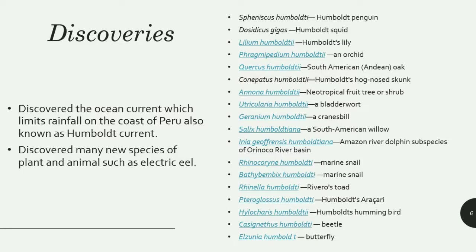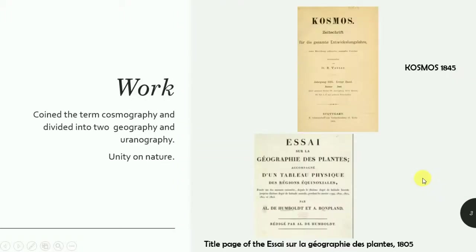Another discovery was the ocean current that limits rainfall on the coast of Peru, which was later named the Humboldt Current in his honor. He also discovered many new species of plants and animals. A list of the various plants and animals he discovered during that five-year expedition is provided, and he later published those species in his book.